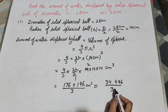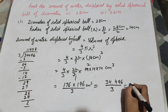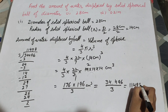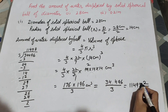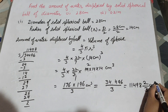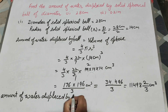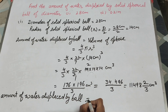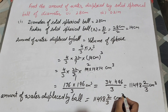Now 176 times 196 gives 34,496. So we have 34,496 over 3. Dividing by 3 using long division, we get 11,498 and 2 over 3 centimeters cubed. So this is the amount of water displaced by the ball — equal to 11,498⅔ cm³.